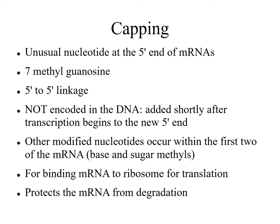The first modification is capping, where we have an unusual nucleotide at the 5-prime end of the pre-mRNA. The nucleotide is a methylated form of guanosine — 7-methylguanosine. The cap has an unusual 5-prime to 5-prime linkage between the first transcribed nucleotide and the 5-prime carbon of the capping nucleotide's sugar. This cap is not encoded in the DNA; it's added after transcription begins to the new 5-prime end.